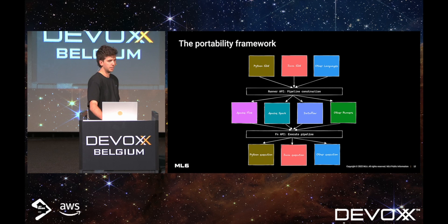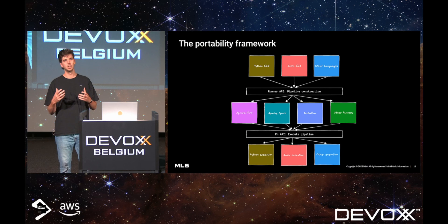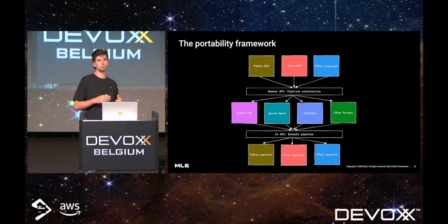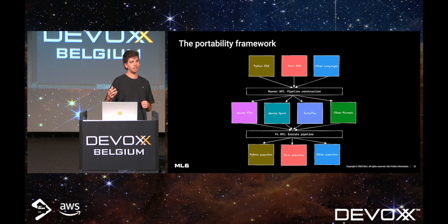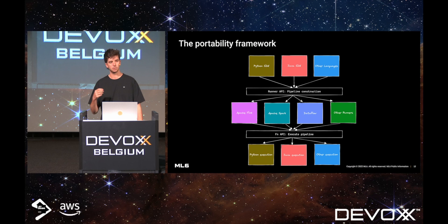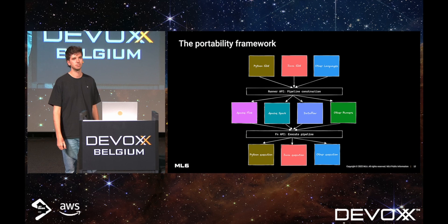How does Beam achieve this? It uses the portability framework. You have your different language SDKs — you can use each of them to describe your pipeline — and they are all translated into a general pipeline schema, which is based on Protos via the Runner API. So you build the pipeline with your language SDK and it gets transformed into this general representation. The runner uses this representation, and then via the Fun API, it can execute it in the relevant execution environment linked to your original SDK. If you describe your pipeline in Python, then you will execute in a Python environment, but you can do it on any of the frameworks mentioned.